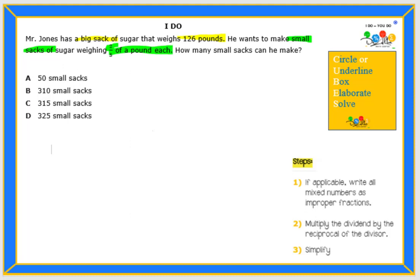So once again our question we're going to box it in: how many small sacks can he make? Remember in our yellow box it has our problem solving strategies to circle and underline important information, which we use the highlighter for, and to box in our question. Now to elaborate is to use a strategy that can help us understand or figure out the problem. In this case I would like to draw a simple picture.